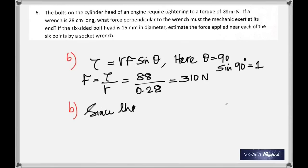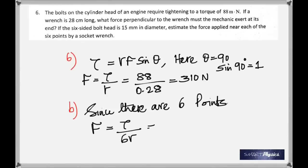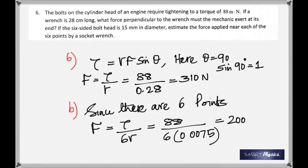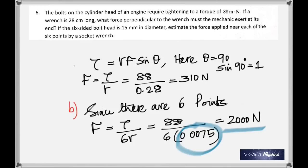For part b, the bolt is six-sided so there are six points where the force acts. Now F = τ/(6r). The diameter is 15 mm, so the radius is 7.5 mm = 0.0075 m. That gives 2,000 newtons applied at the bolt head. So the mechanic applies only 310 N, but that translates to 2,000 N — you see the advantage of using a six-sided bolt.